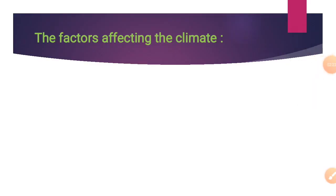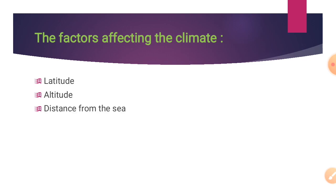Next, we are going to see what are the factors affecting the climate. The factors are: latitude, altitude, distance from the sea, monsoon wind, relief, and jet streams. Let's see them one by one.